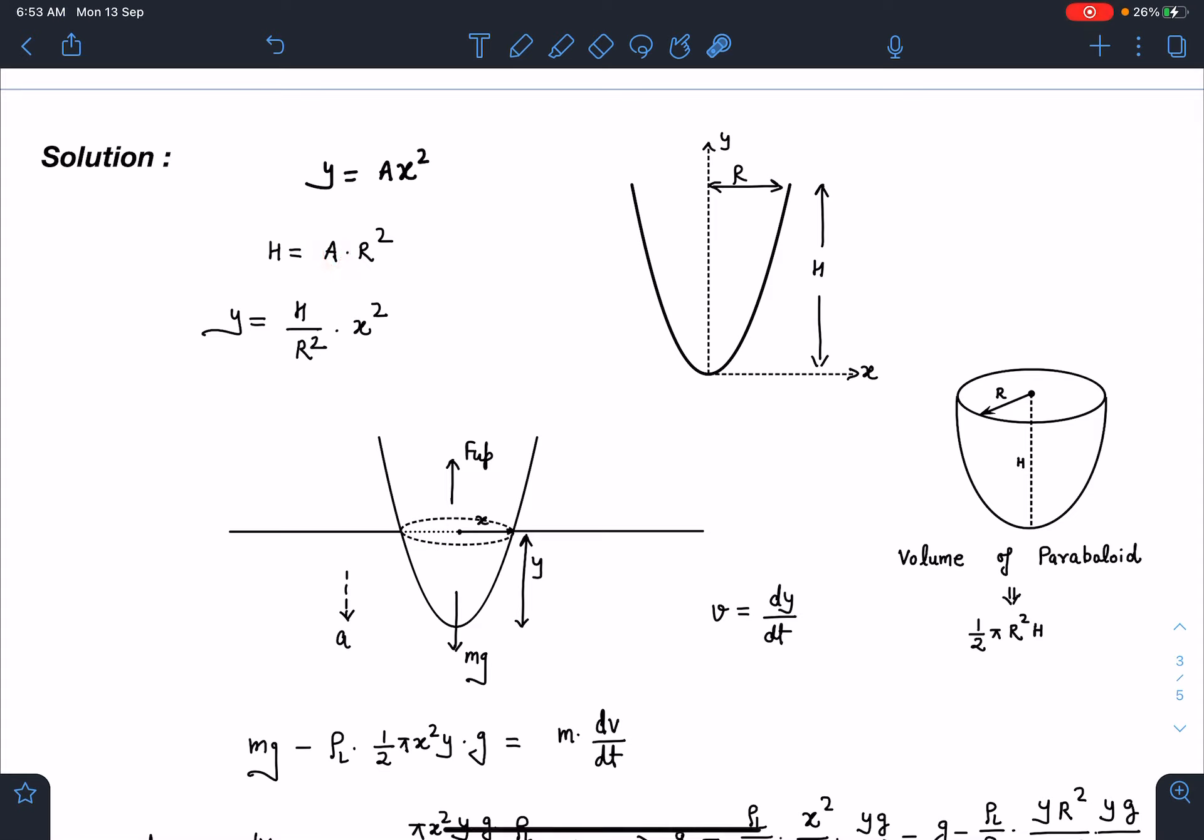So you can see here a is h by r square. So this parabola equation is known to us and that is y is equal to h by r square into x square. Now this is also a pretty standard result and I will request everyone to remember this because it is a very handy result.